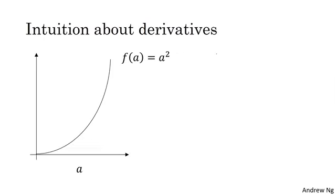Here I plotted the function f of a equals a squared. Let's look at the point a equals 2. So a squared, or f of a, is equal to 4. Let's nudge a slightly to the right. So now a is equal to 2.001. f of a, which is a squared, is going to be approximately 4.004.